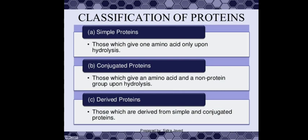To summarize, proteins are classified into three groups based on composition: simple proteins, conjugate proteins, and derived proteins. This was the introduction to proteins. In the next session, we will study amino acids and polypeptide chains in detail. Thank you.